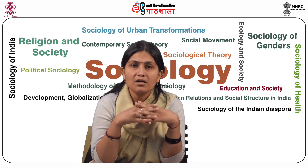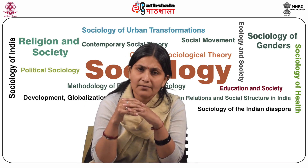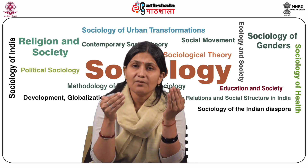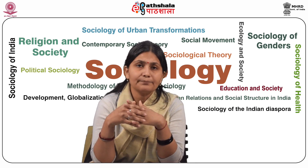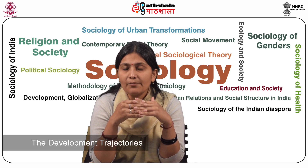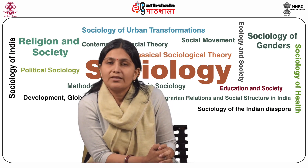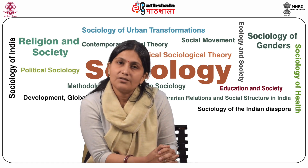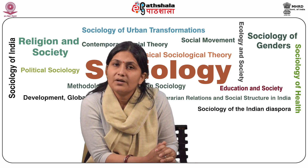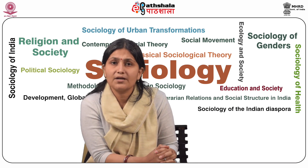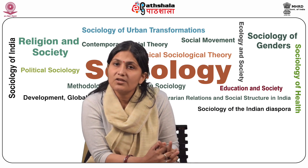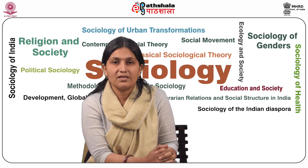Kolkata initially grew from a cluster of villages to a key port of the British Empire and was later turned into the capital, whereas Delhi was purposely planned and built to be the new capital of British India. Although both cities share histories of being colonial capitals, the development trajectories of Kolkata and Delhi followed rather different paths. There are extreme contrasts between these cities, but they have several commonalities. These cities bore the burden of a large number of refugees that arrived as a result of the turmoil surrounding partition and independence in 1947, which changed the demography and urban structure of these cities considerably.